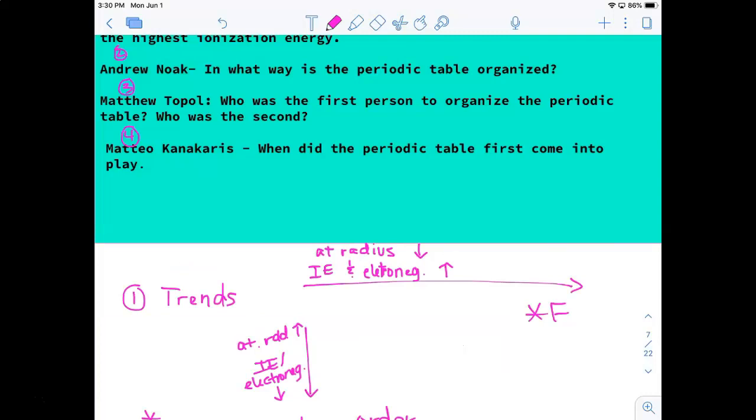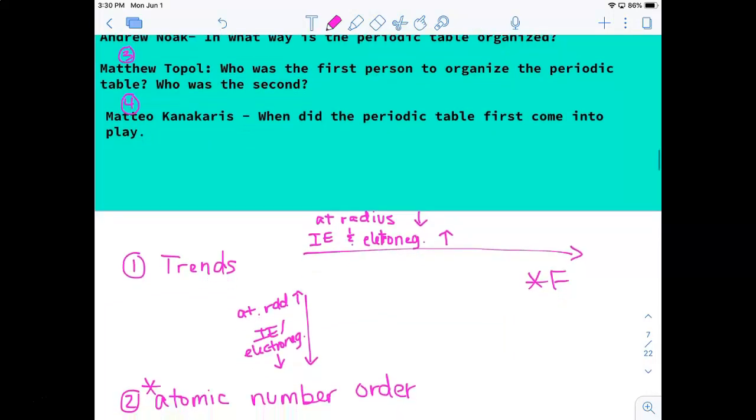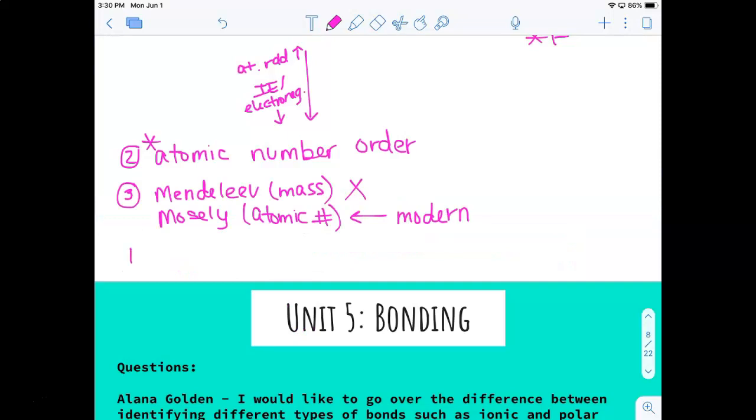And Matteo's question: when did the periodic table first come into play? So if we're talking about Mendeleev, we were in 1869. And again, that's not a date you have to know. You just have to understand that the reason for them putting the elements in a chart like this is to help us know things about the elements that we might not.